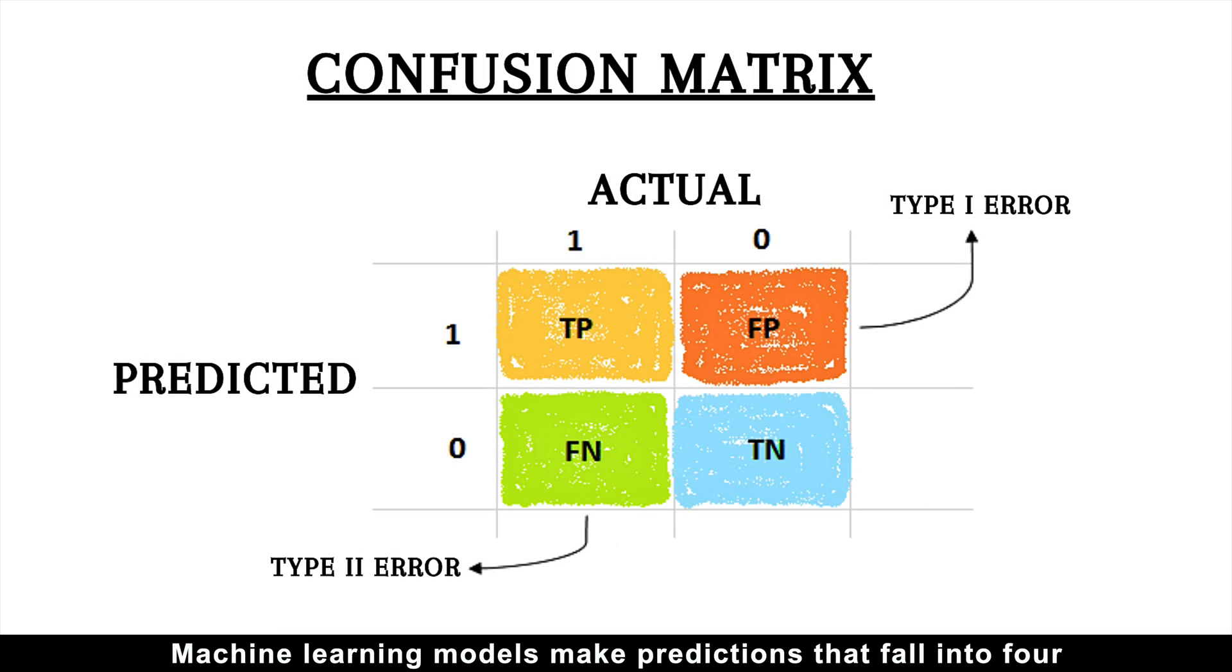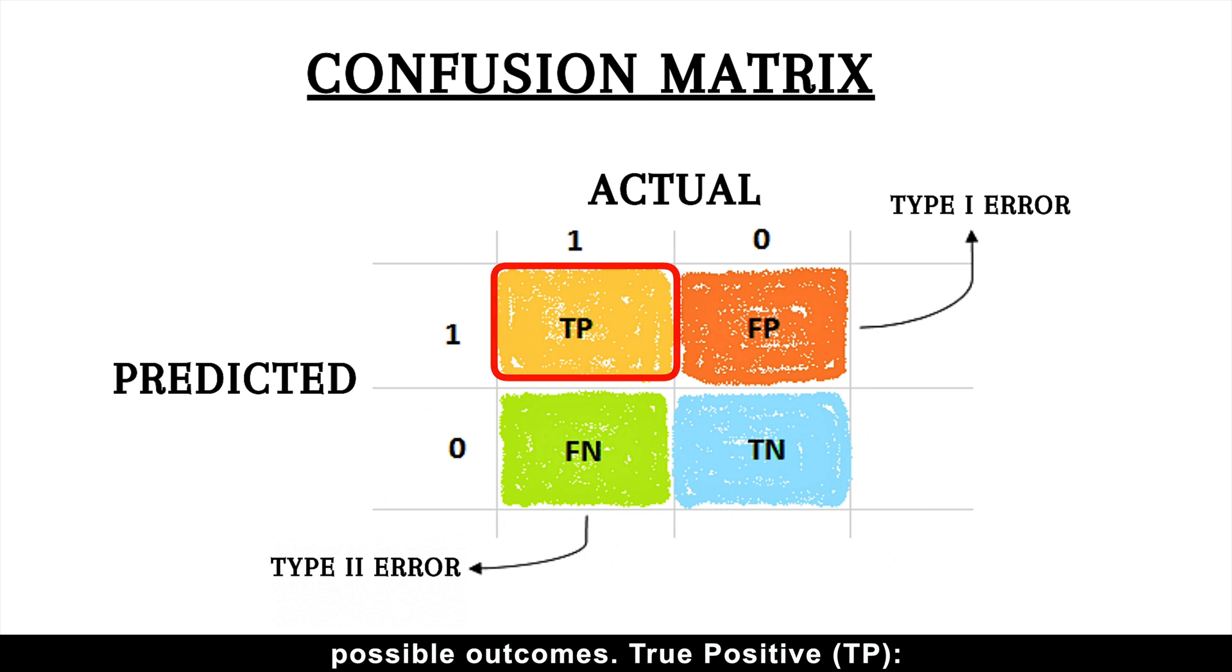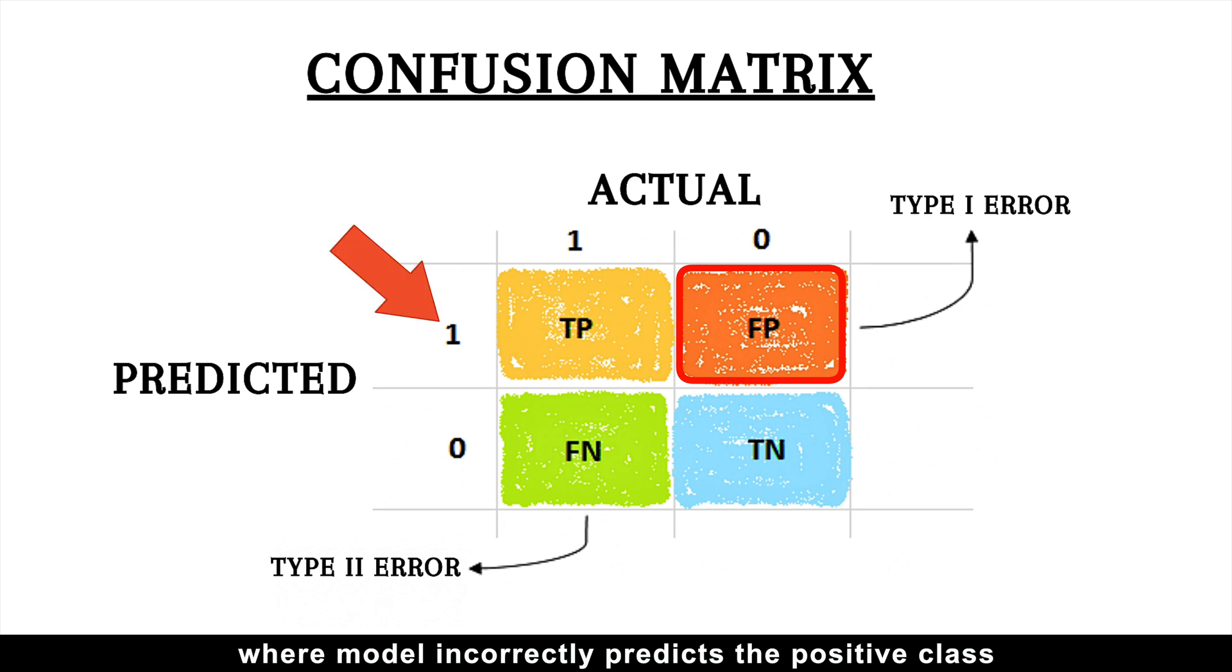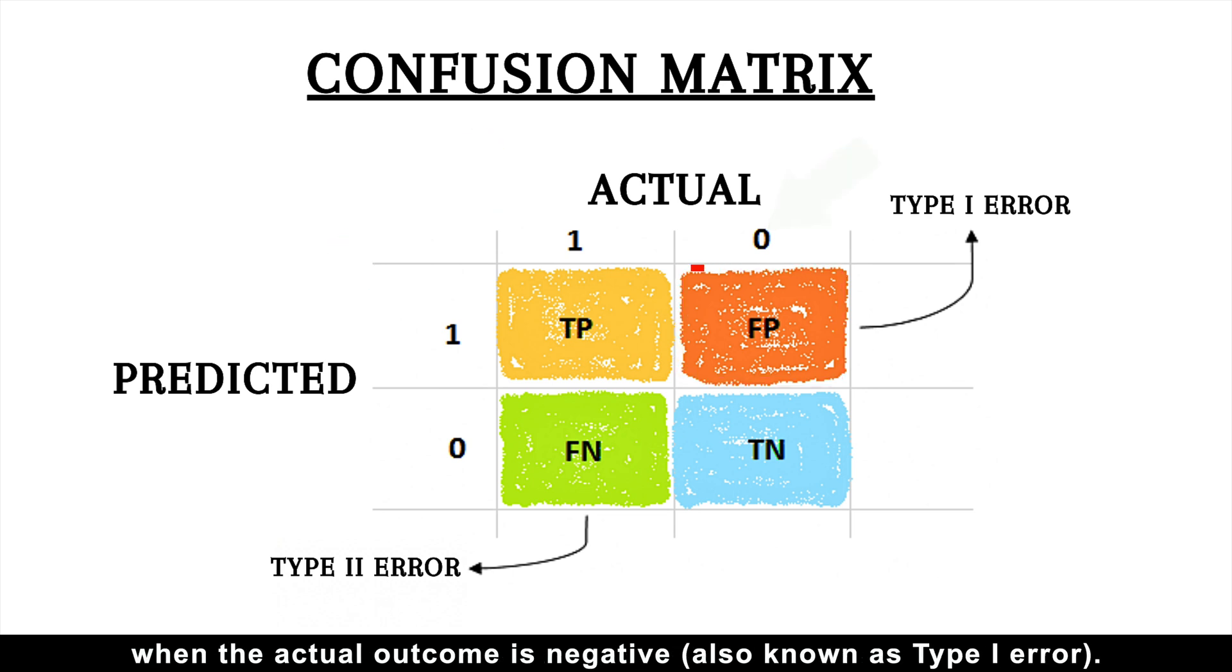Machine learning models make predictions that fall into four possible outcomes. True positive, where the model correctly predicts the positive class. False positive, where the model incorrectly predicts the positive class when the actual outcome is negative, also known as Type 1 error.